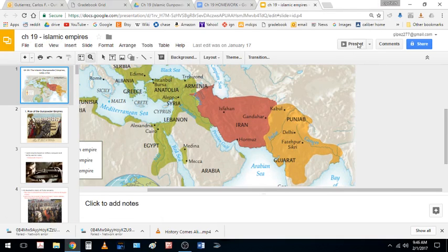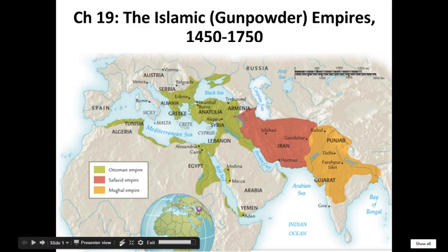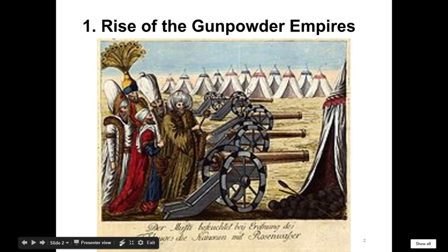Here we go with our Chapter 19 video lecture. We're going to start looking at the gunpowder empires, or the Islamic gunpowder empires to be more exact. There are three of them: the Ottoman Empire, run by the Ottoman Turks; the Safavid Empire, centered in Persia, which is modern day Iran; and the Mughal Empire, which is in India. We are in time period four, the early modern era from 1450 all the way to 1750.